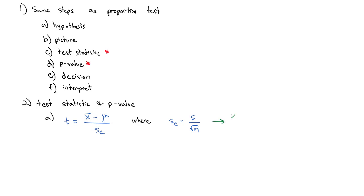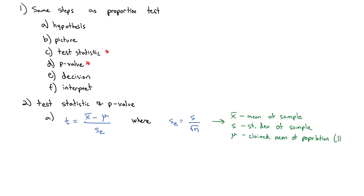A few notes: x-bar is the mean of the sample, s is the standard deviation of the sample, mu is the claimed mean of the population and comes directly from our null hypothesis, and n is the sample size. Once we have the test statistic, we find the p-value using Excel.